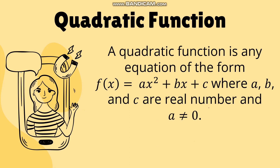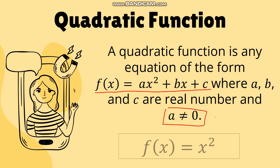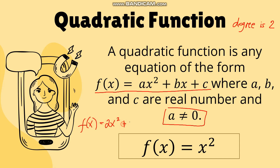A quadratic function is any equation of the form f of x equals ax squared plus bx plus c, where a, b, and c are real numbers and a is not equal to 0. For a quadratic function, the degree is 2 — meaning the highest exponent of the variable x is equal to 2. An example is f of x equals x squared. Another example is f of x equals 2x squared plus 4.